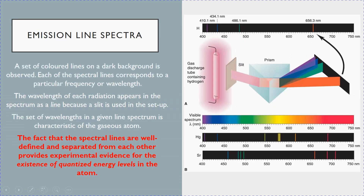So emission line spectra consists of certain colors on a dark background. Each of these lines corresponds to a particular wavelength or color. It appears as a line because of the slit that was used in the setup. The important thing to note is that what you see on the screen is not a continuous band, but rather only certain colors. And these colored lines are characteristics of the element inside the discharge tube.